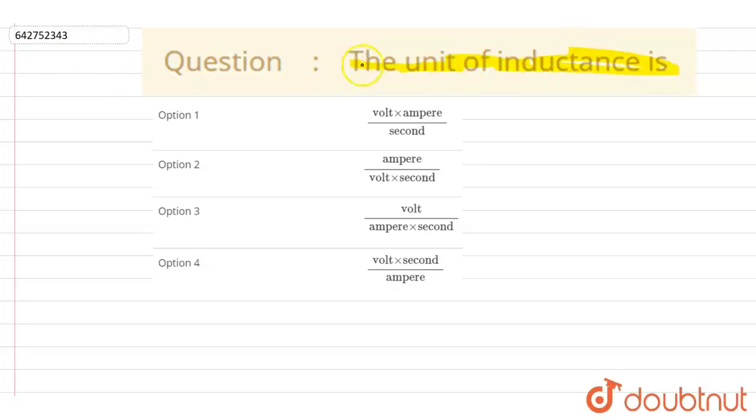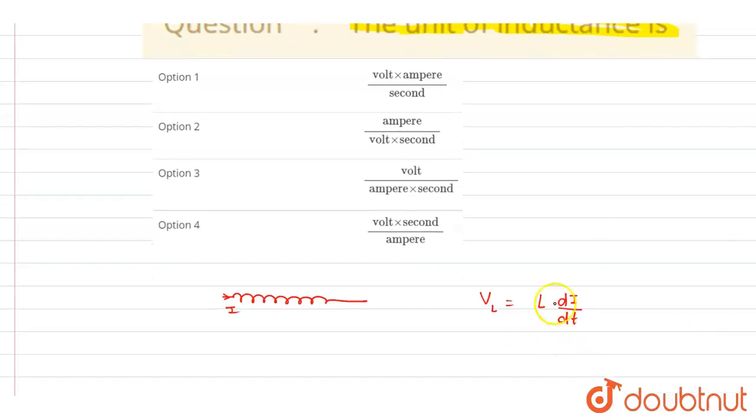So if you see the potential difference across an inductor, if I write down, let's say this is the inductor and the current through it is i, so if I write down the potential difference across it, it will be di/dt, rate of change of current. So we want the unit of inductance, that is L. So inductance is potential difference by the rate of change of current.